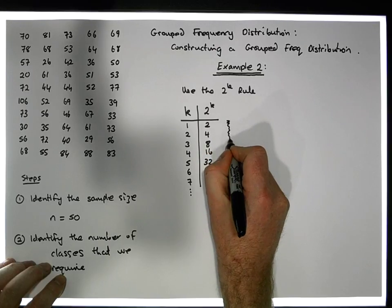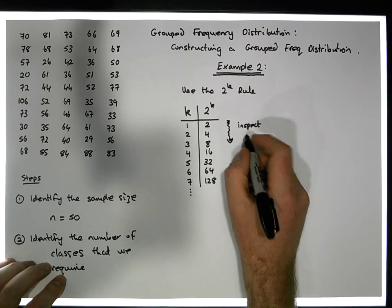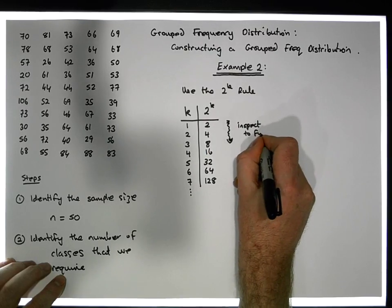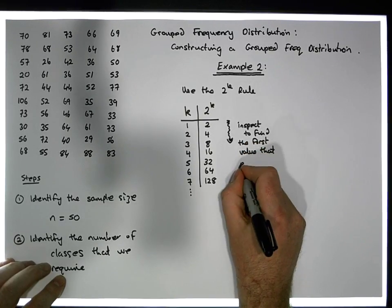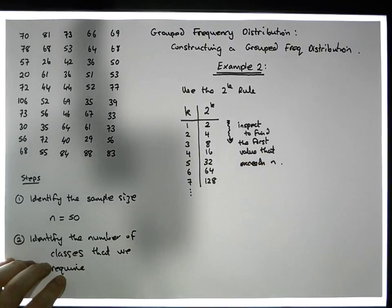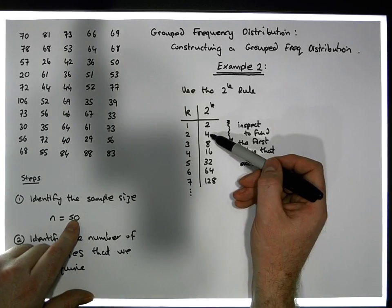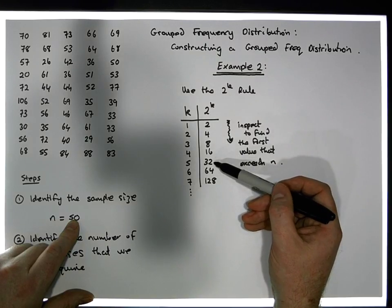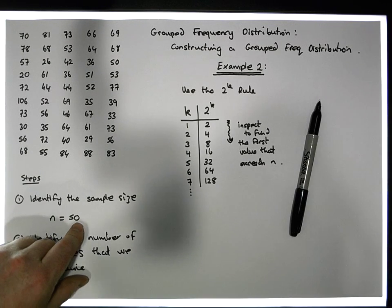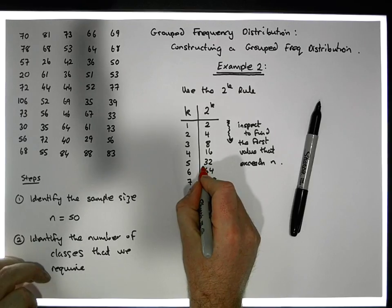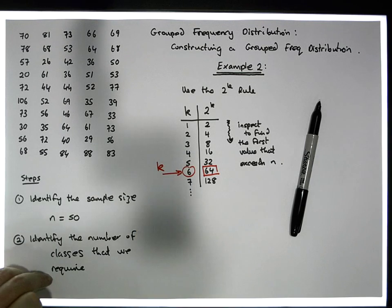What we now do is inspect down this column to find the first value that exceeds our sample size n. Our sample size is 50, so: 2 doesn't exceed 50, neither does 4, 8, 16, or 32, but 64 exceeds 50. So the number of classes that we should have — the first value that exceeds our sample size is 64, which corresponds to k=6. So we should have 6 classes in our distribution.